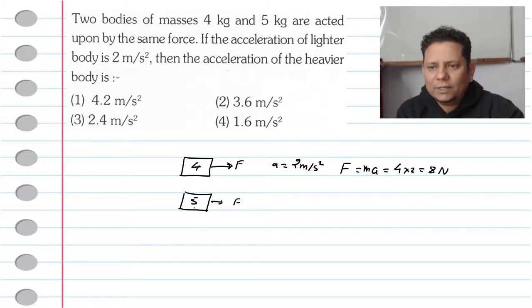For the same force applied to the 5 kg block, the acceleration equals force divided by mass, using the same law. So the acceleration is 8 newtons divided by 5 kg.